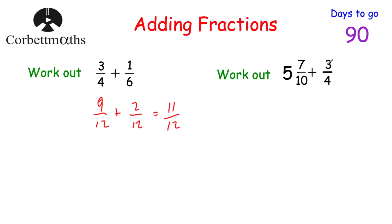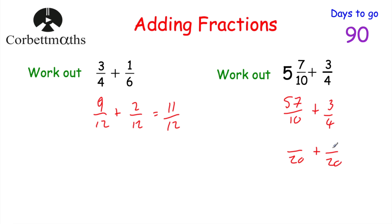Next, work out five and seven tenths plus three quarters. I'm going to make the mixed number top-heavy: five times ten is 50, plus seven is 57, so that's 57 tenths. We've got 57 tenths plus three quarters. For a common denominator, I'm thinking 20 because ten, twenty, and four, eight, twelve, sixteen, twenty. So I'll use 20 and 20. To get from ten to twenty we double it, so double 57 is 114. To get from four to twenty we multiply by five, so three times five is 15. That gives us 114 twentieths plus 15 twentieths.